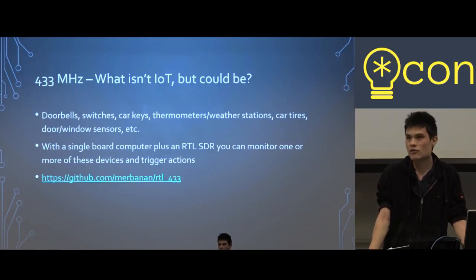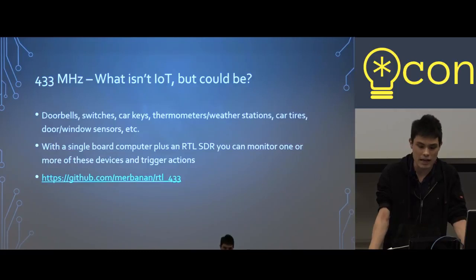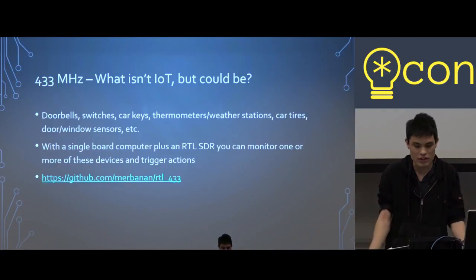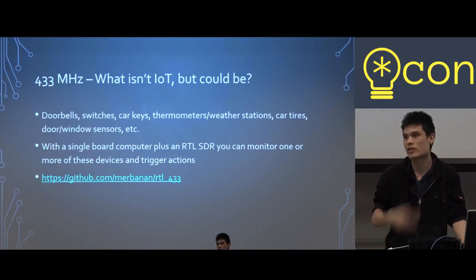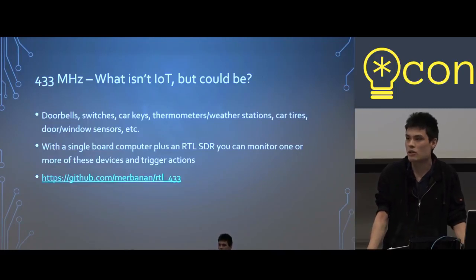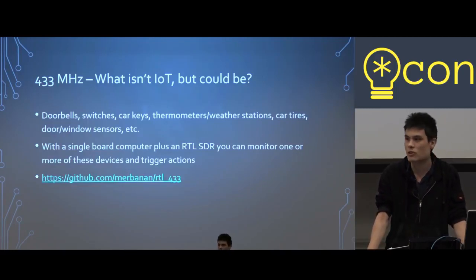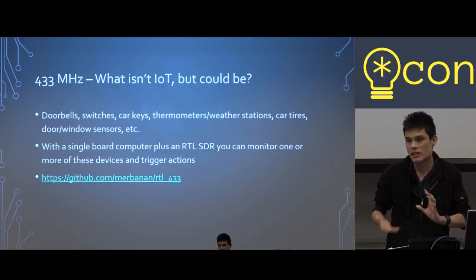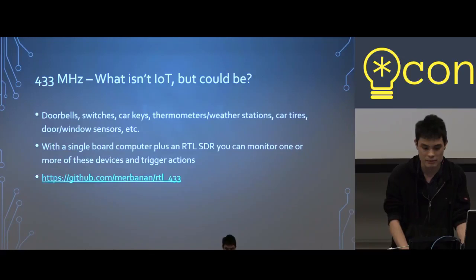About the 443 MHz spectrum — there are lots of interesting things that run there: doorbells, switches, car keys, thermometers, weather stations. You can build lots of cool projects. For example, you could put a weather station outside your home and put that weather data up on a dashboard, or tweet you when it's really cold. You could also build a little security system. There are tons and tons of things you can do with this.